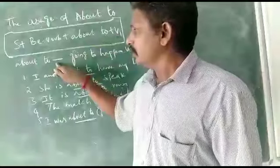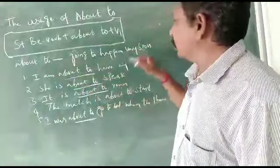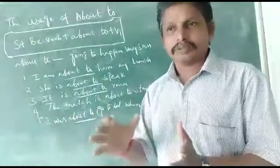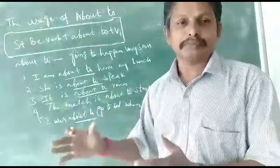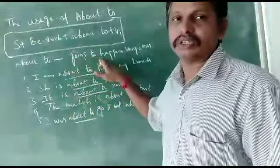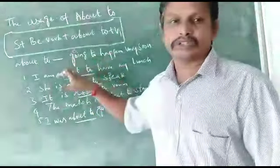About to means something is going to happen very soon. Something is going to happen very soon after. This is very important. This is called usage. Now let us look at some examples.